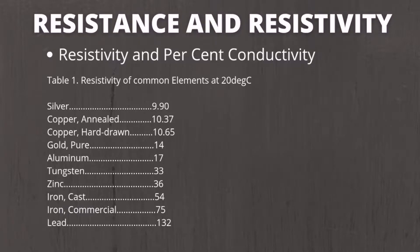The resistivity table of common elements at 20 degrees Celsius was already shown in Part 1 of my video on Resistance and Resistivity. In solving resistivities of materials in micro ohm centimeter, we just have to remember that for copper we have 10.37 ohm circular mil over feet, which is also equal to 1.724 micro ohm centimeter. For other materials, we just have to use the proportionality method.